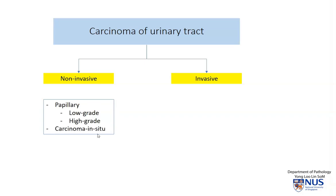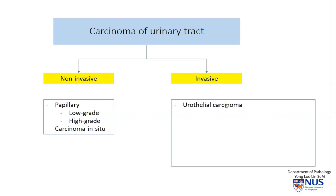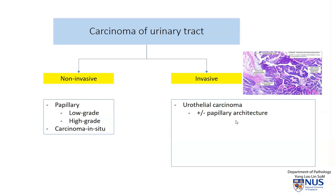There is also carcinoma in situ, where the basement membrane of the bladder mucosa is not yet breached. Among the invasive tumors, the commonest histologic type is urothelial carcinoma, and this may or may not have a papillary architecture. This is an example of a papillary architecture, where you can see towards the lumen of the bladder it is very papillary with these fronds. This pink area is the muscularis propria, so it is clear that this tumor is invading into the bladder wall.